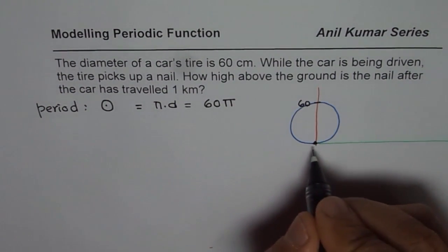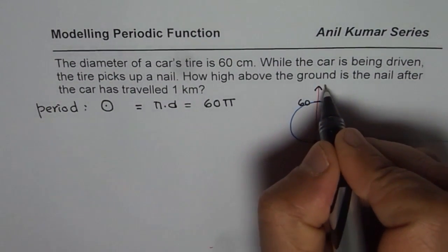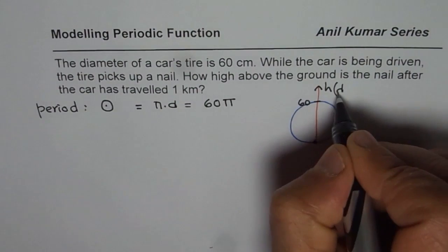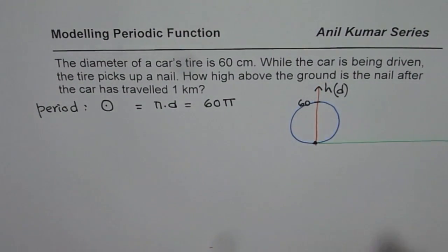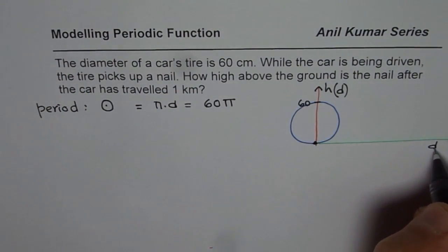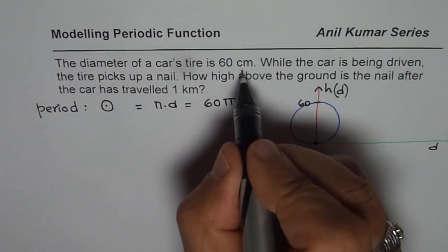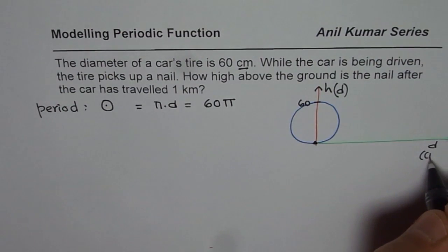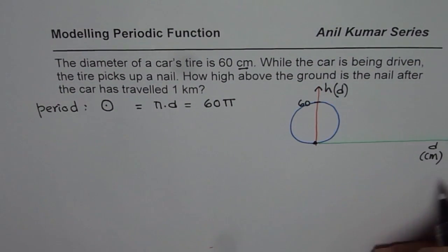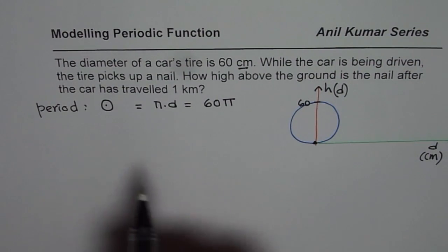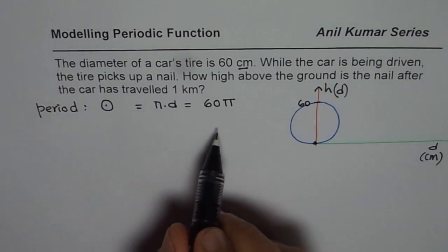So here, when we are talking about height, so let's say height, it is function of distance traveled. I will write height as a function of distance d and we will take distance along the x-axis. Since this unit is centimeter, we will take distance in centimeters. That is how we are going to work and that is the base for us.